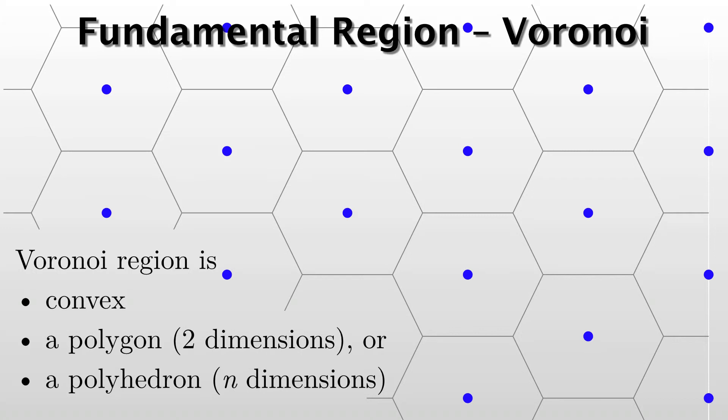But in n dimensions we don't use the word polygon, we use the word polyhedron. So the Voronoi region, generally speaking, is always a polyhedron, which is convex.